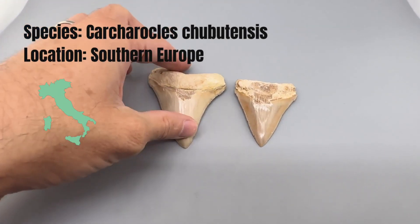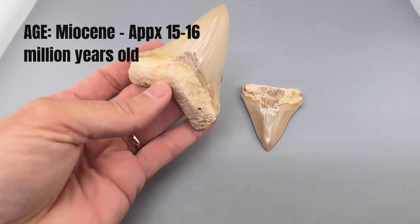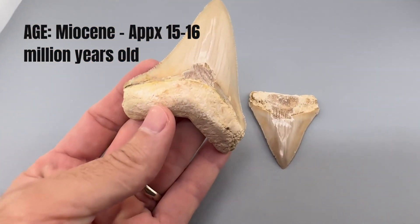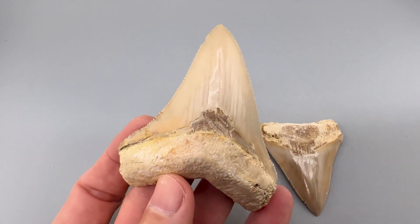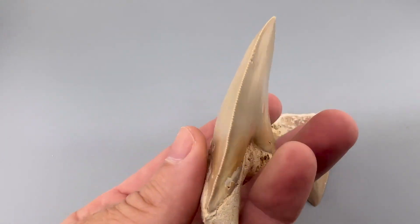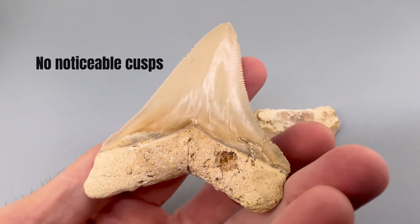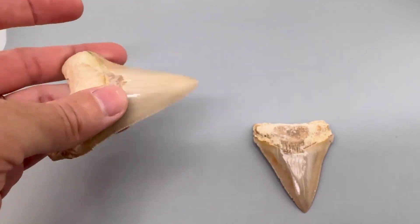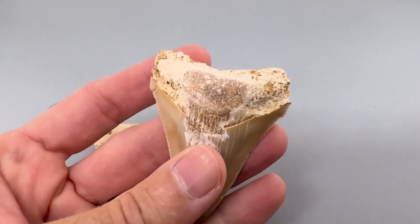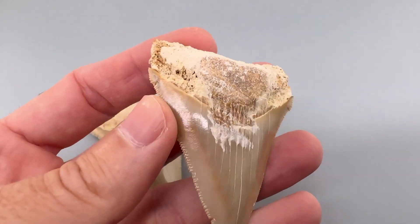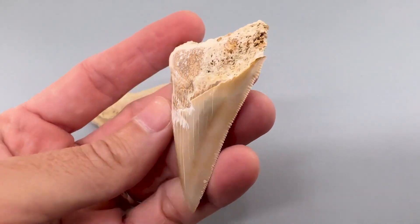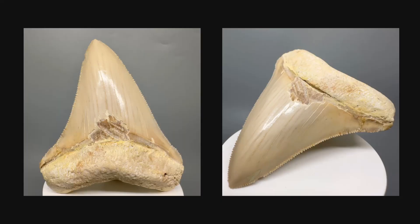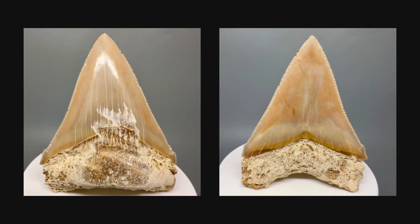Next up, we've got these teeth from Southern Europe, about 15 to 16 million years old. These are Chubutensis as well, but if you look closely, they don't really have those cusps that you look for with Chubutensis. Most of these teeth have very, very minor cusps at this age, but it's definitely something different that you can tell is not a normal tooth. These are Chubutensis from Southern Europe.